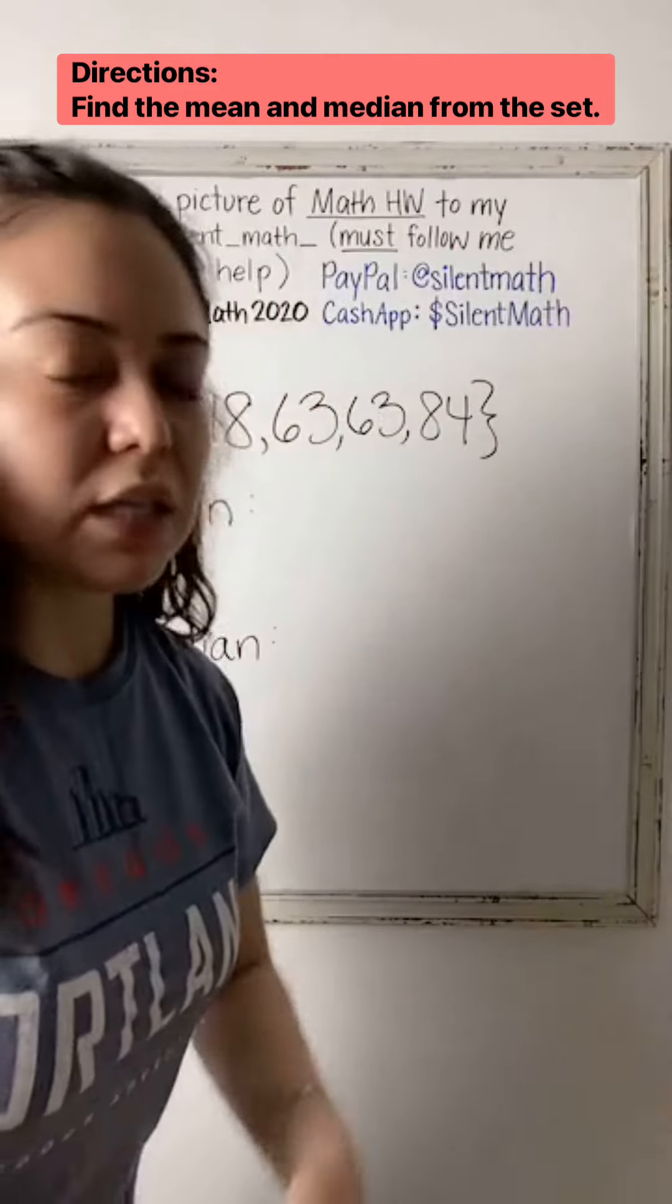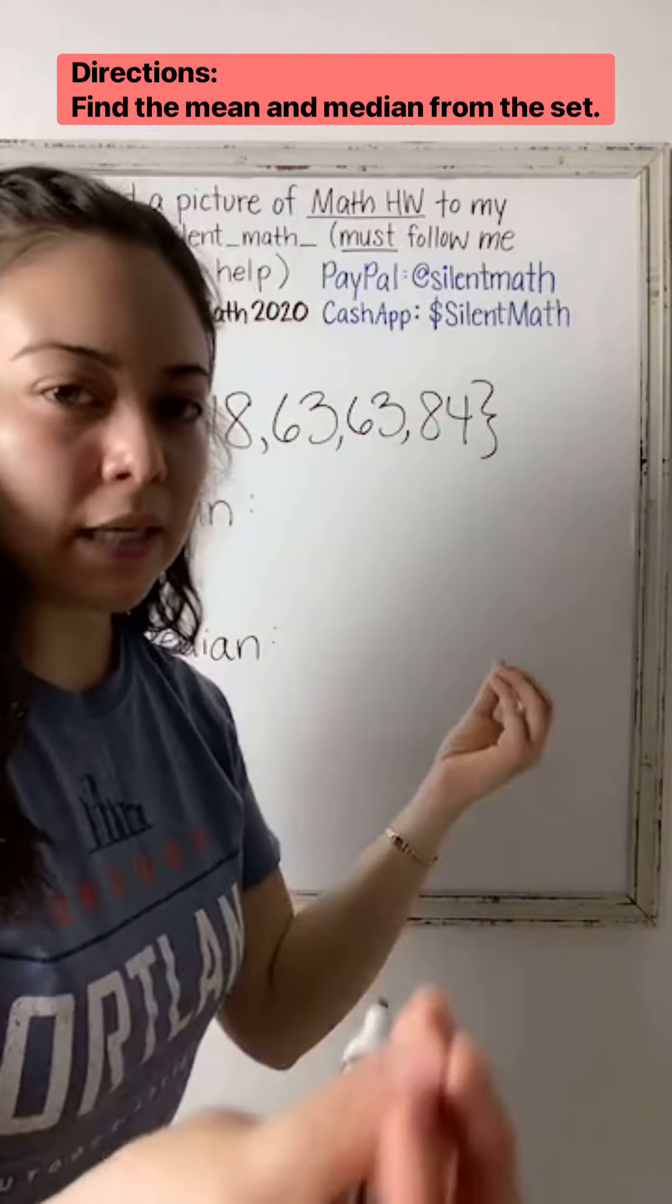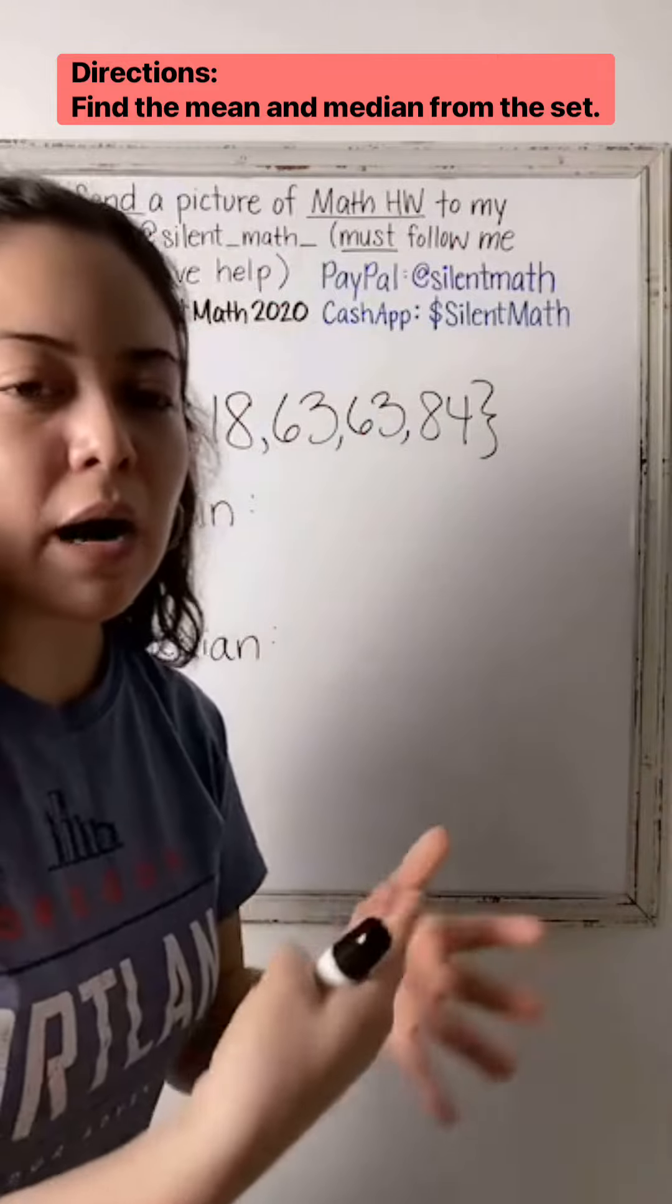Mean is basically the average. To find the average, you add up all your numbers and then divide by however many numbers you have.